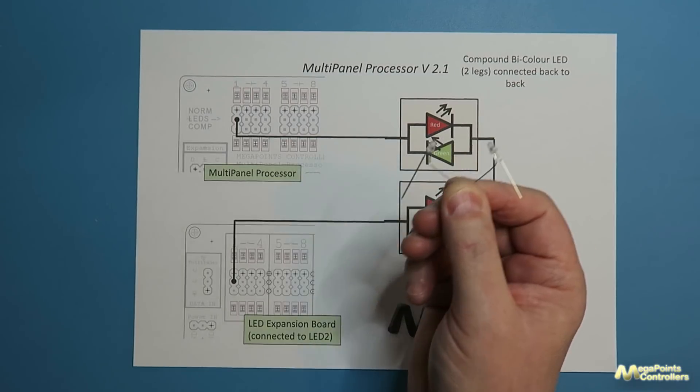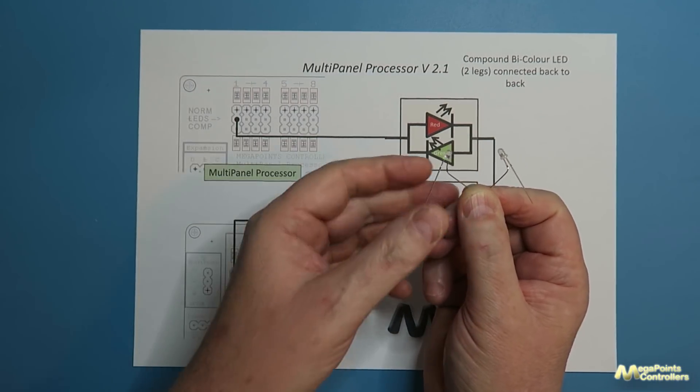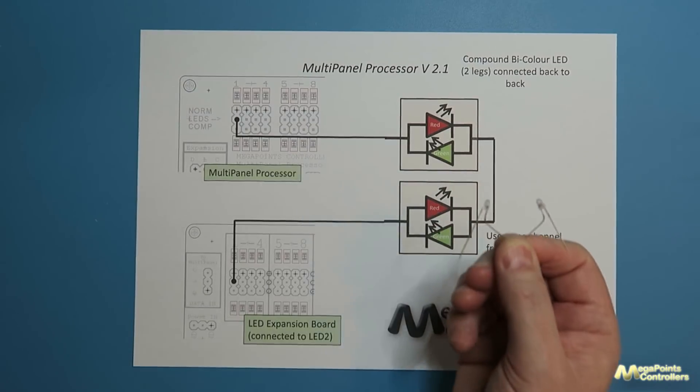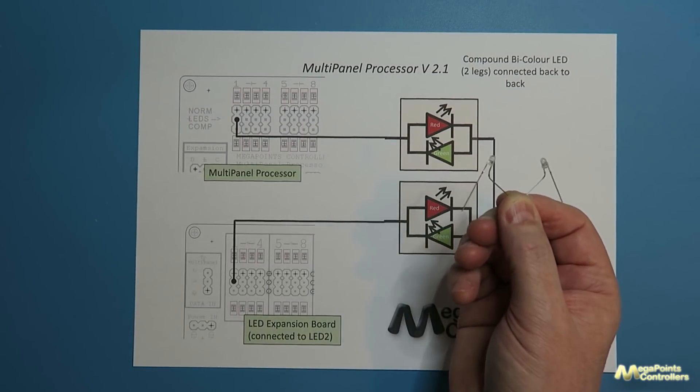Also including the suitable current limiting resistor. I tend to use a 1K because I want to indicate not light the whole room up.